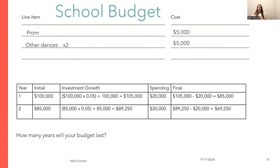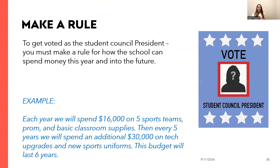So what they'll do is come up with a rule for how they're going to spend the money. They might say, 'Our rule is each year we're going to spend $16,000 on these different things,' and then every few years spend additional money to upgrade uniforms, for example.